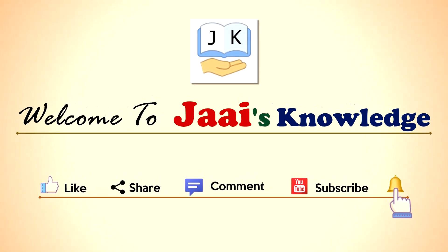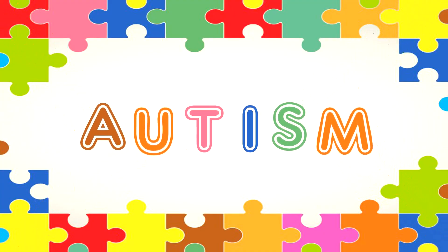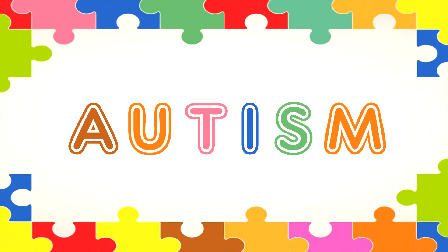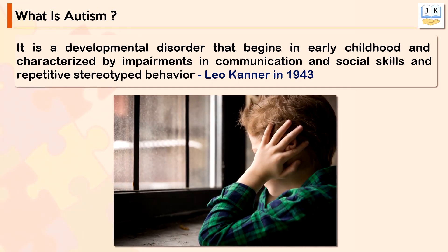In this video we are going to talk about an important topic: autism. Autism is a developmental disorder that begins in early childhood and is characterized by impairments in communication and social skills and repetitive stereotyped behavior. Autism was first described by Leo Kanner in 1943 after his research work with a group of behaviorally deviant children.